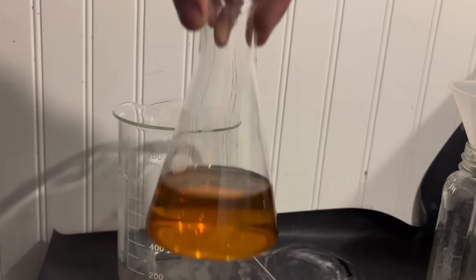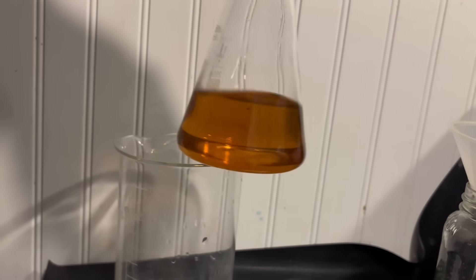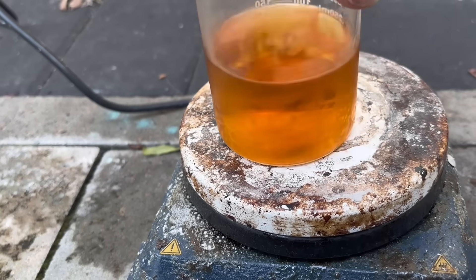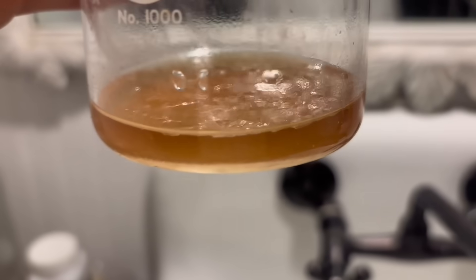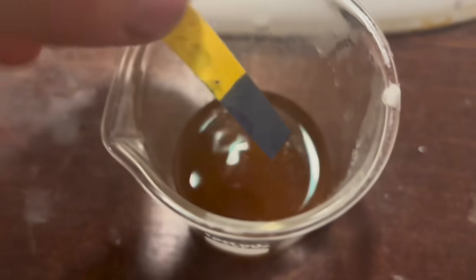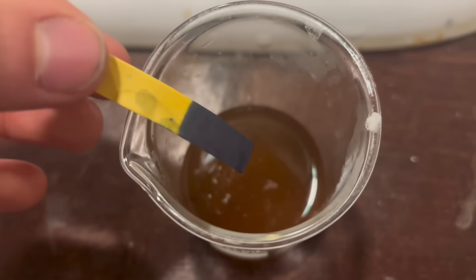Now what I want to do is decrease the volume even further to make more solute crash out. So I decanted off the remaining liquid and put it back on the hot plate. After reducing the volume further, we can see that we have a very basic solution now. We also have a lot of really nice crystals crashing out of the solution.